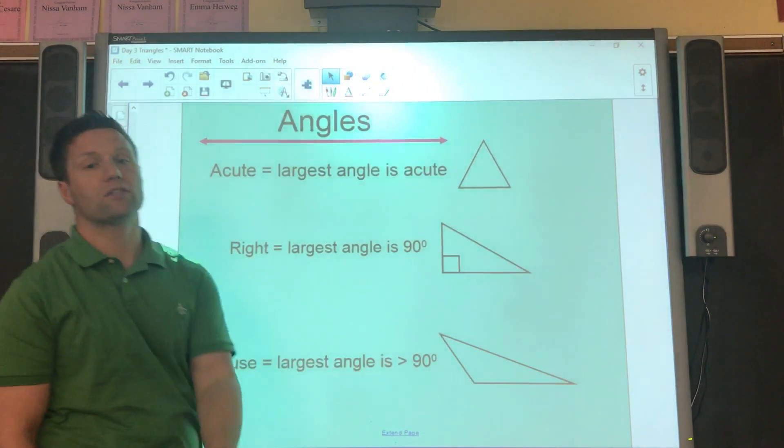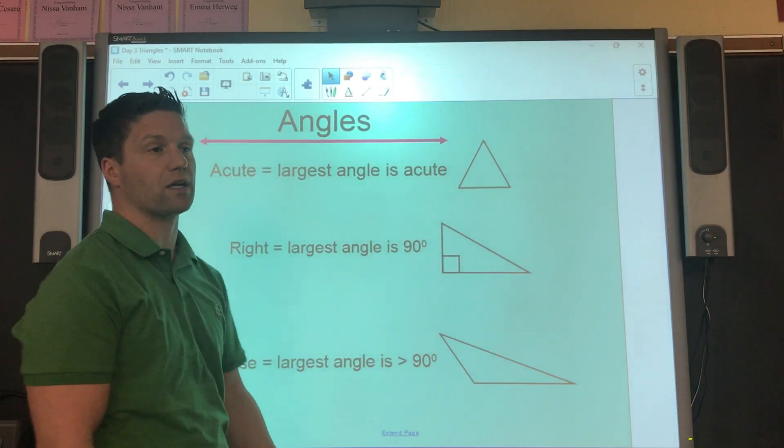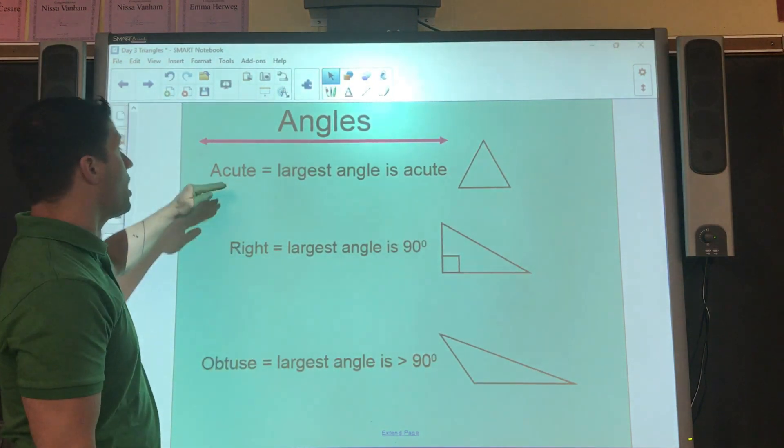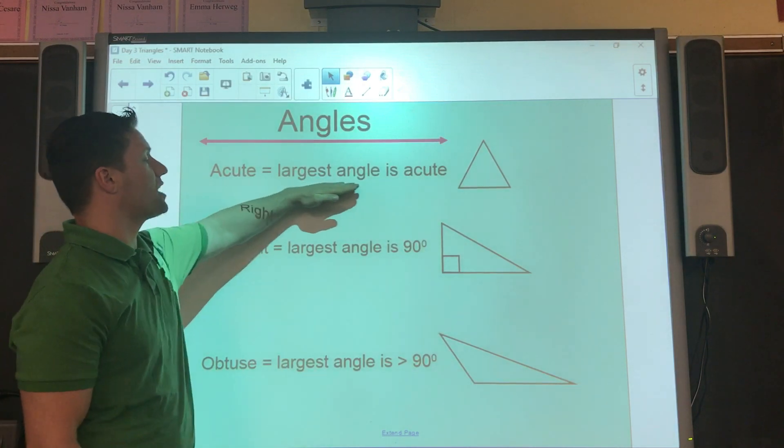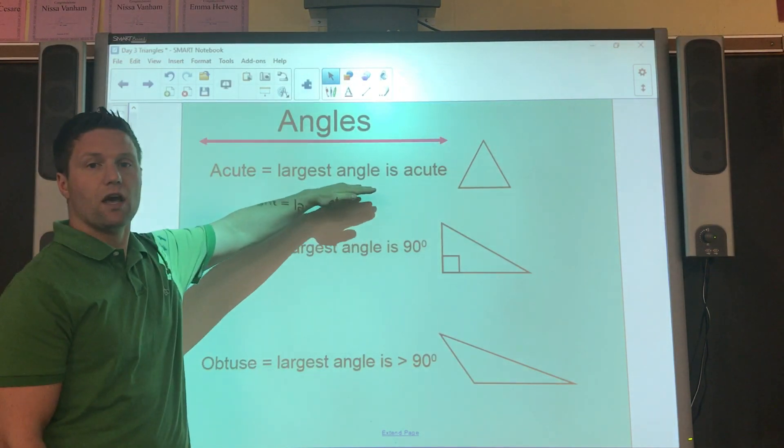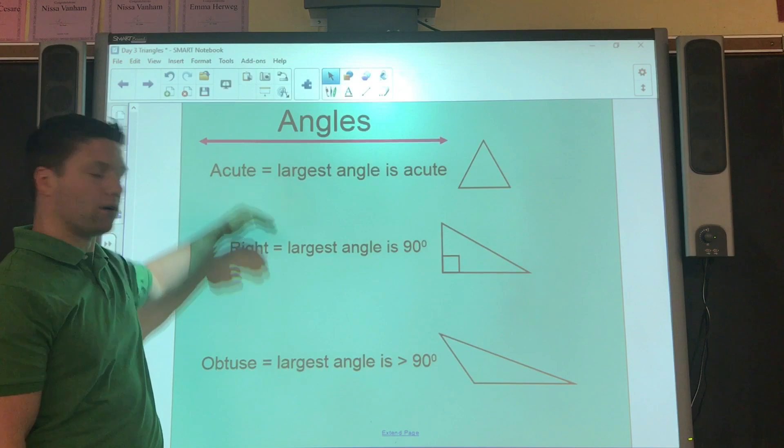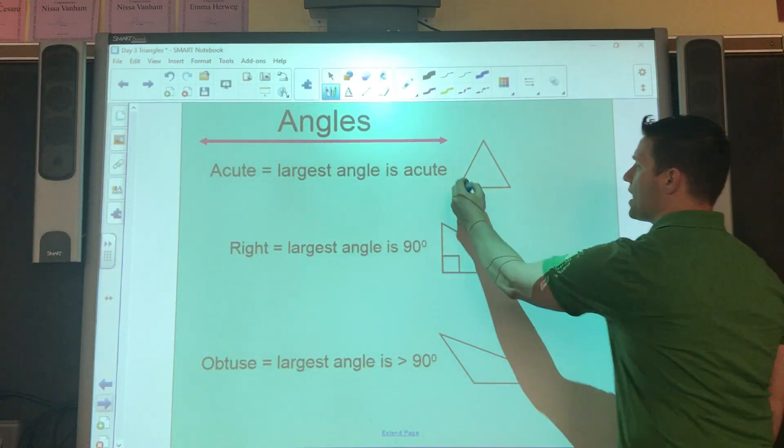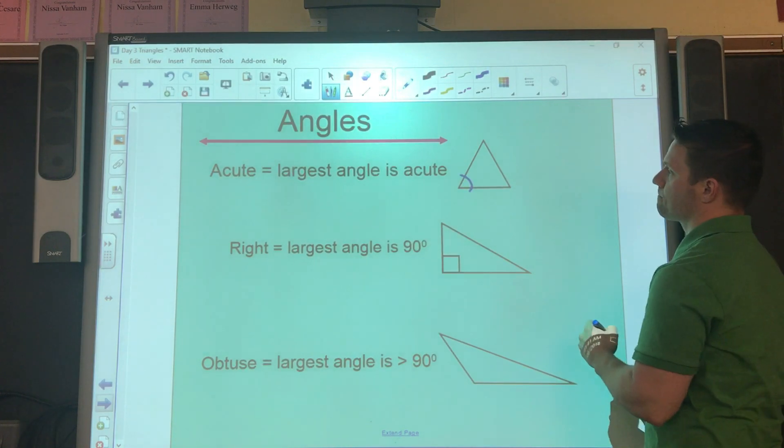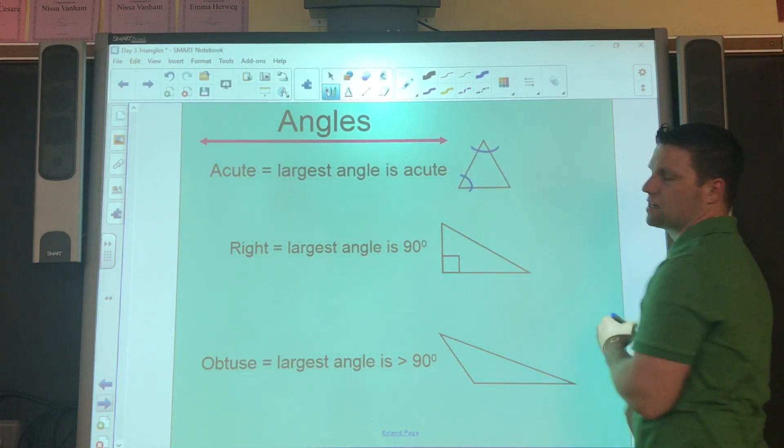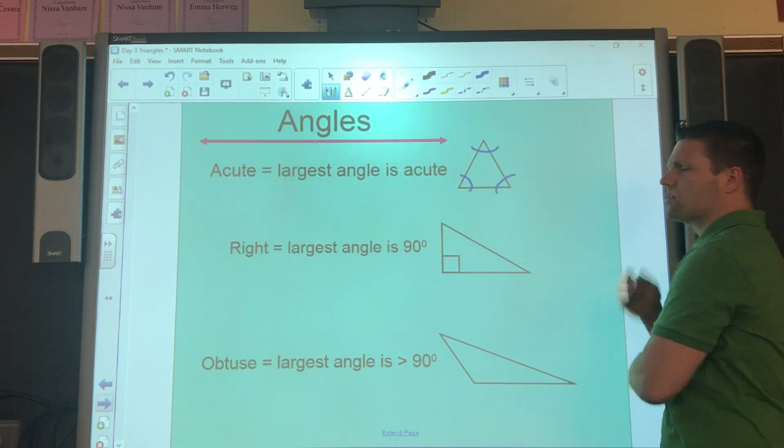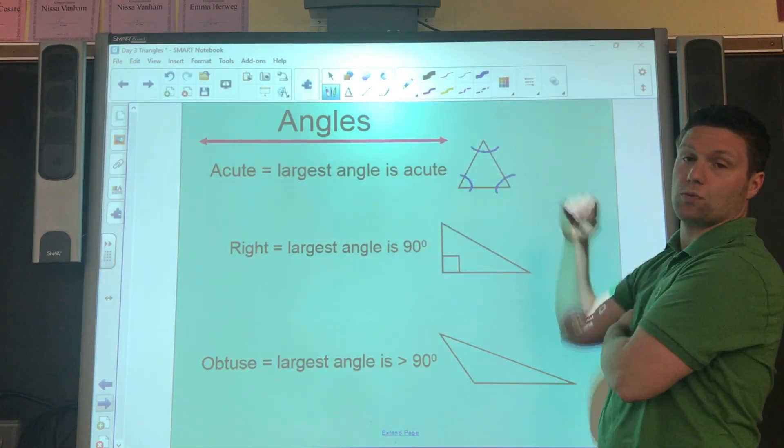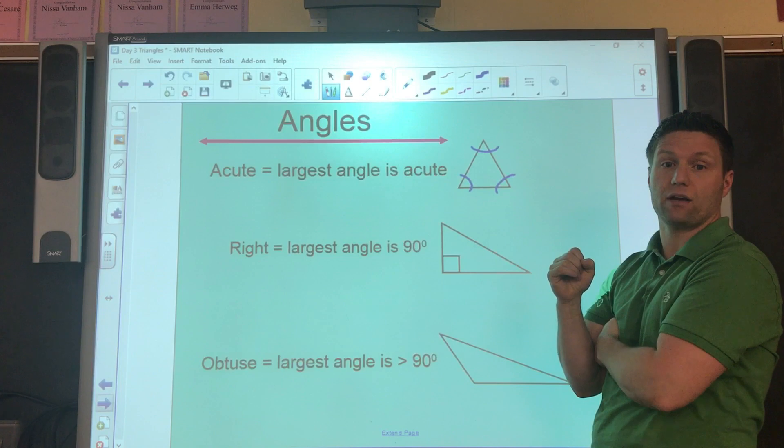So how else can we classify triangles? We can classify them by their angles. So, acute. When the largest angle is acute, then we call that an acute triangle. Well, acute, as we know, is less than 90 degrees, and that one's less than 90, and this one is less than 90, and this one is. So, its largest angle is acute, therefore this would be an acute triangle.